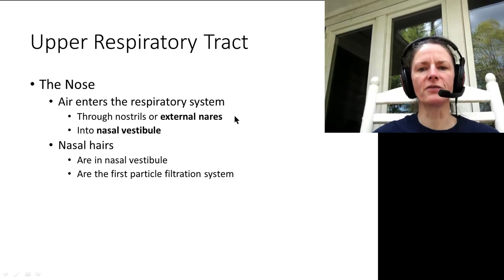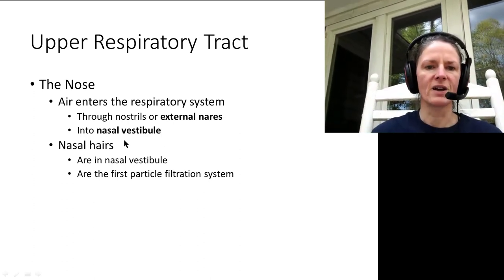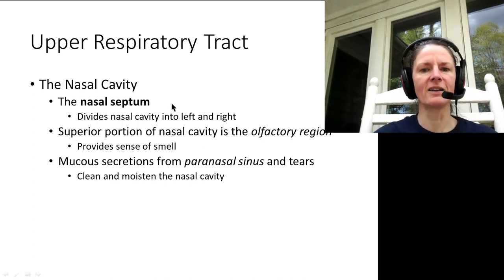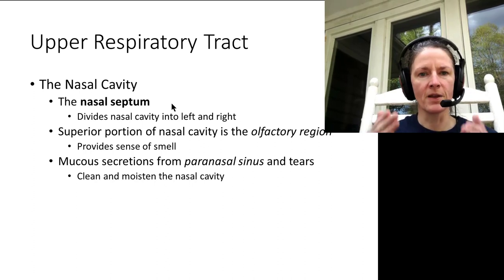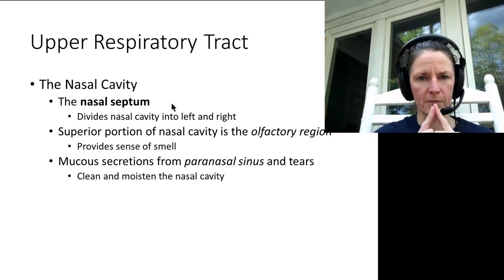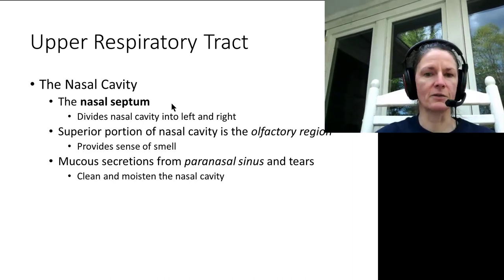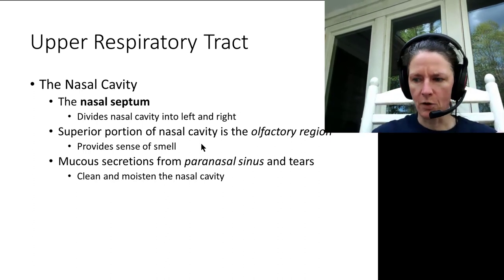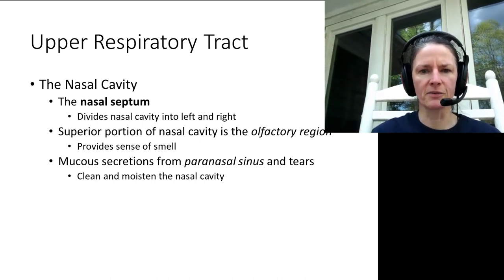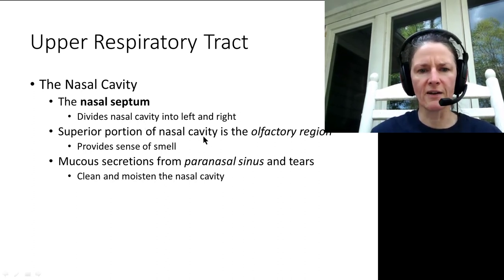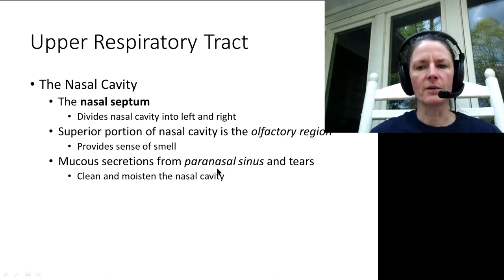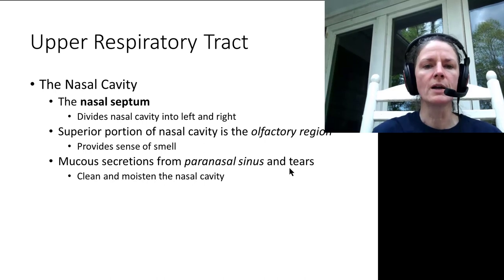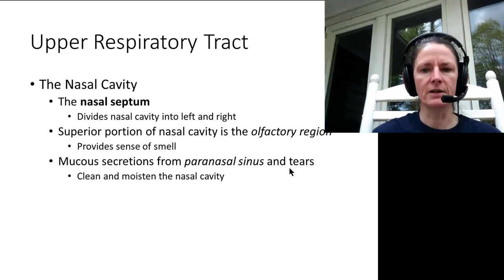Air enters via the external nares into the nasal vestibule, where nasal hairs provide the first filtration. Within the nasal cavity, the nasal septum divides it into left and right halves, formed by the perpendicular plate of the ethmoid bone and the vomer. Superiorly is the olfactory region at the bottom of the cribriform plate, where the olfactory nerve passes through perforations. The olfactory epithelium sits on the superior portion of the nasal cavity. Mucous secretions from the paranasal sinuses and tears from the lacrimal ducts also drain into the nasal cavity, helping clear it.